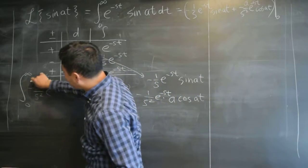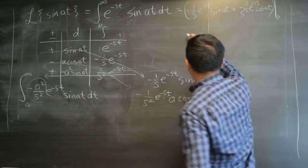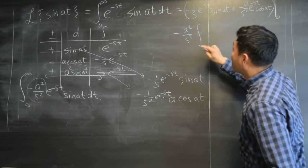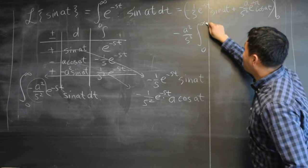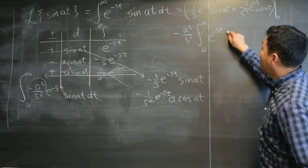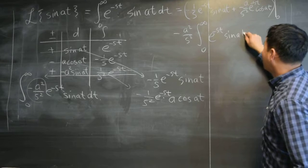And then you also have that integral. Let's do this outside. If you pull that outside, it's negative a squared over s squared integral of zero to infinity of e to the negative st sine at dt.